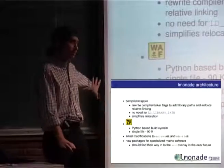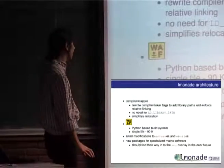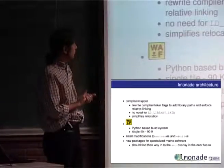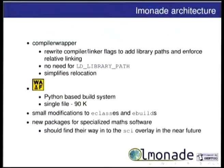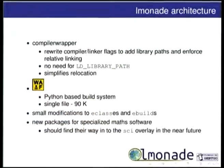There is this tool called compiler wrapper, originally written by Volker Braun — a Sage developer — which wraps GCC and in the background parses the arguments and changes them so that you have the library paths and can enforce relative linking. This means you don't need to set the library path or LD_LIBRARY_PATH arguments to compile and then run the software, because it knows where the libraries already are. And if you want to relocate your compiled binaries, the relative linking really helps because you don't need to go through all the binary files and rewrite the path inside them.